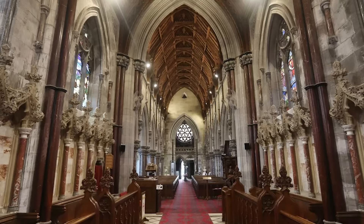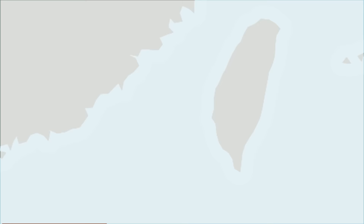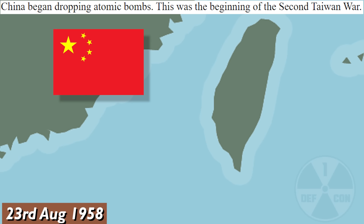15.5 British Darts. 1958 Languinary. Memoirs of Pope Mao. August: A Raytheon Intercontinental Ballistic Missile is launched from Moscow towards Britain. On August 23rd, China began dropping atomic bombs. This was the beginning of the Second Taiwan War. The Cold War has just become hot very quickly.